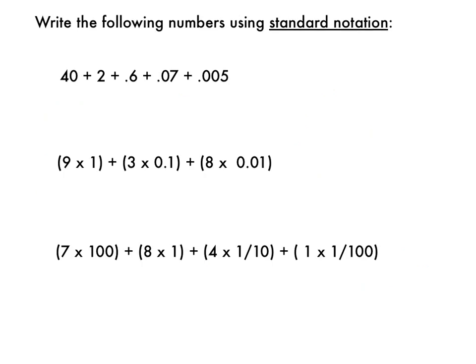Here it says, write the following numbers using standard notation. So this time, they're giving me the expanded notation, and I have to use standard notation or digits to record this number. So I see that it's 42, plus there are 6 tenths, 7 hundredths, 5 thousandths. So this number would be 42 and 675 thousandths.